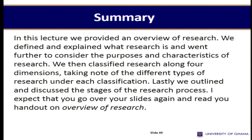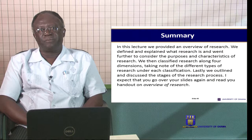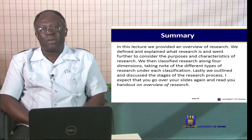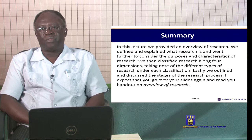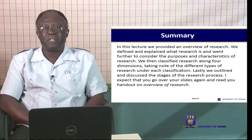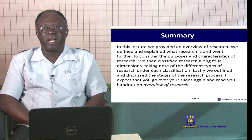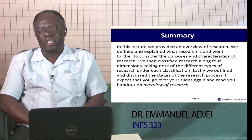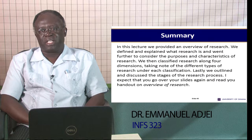In summary, we have in this lecture provided an overview of research. We defined and explained what research is, and went further to consider the purposes and characteristics of research. We then classified research along four dimensions, taking note of the different types of research under each classification. Lastly, we outlined and discussed the stages of the research process. I expect that you go over your slides again and read the handouts on the overview of research, as your handouts should be read alongside the prescribed textbooks. Thank you.